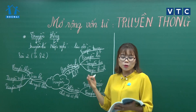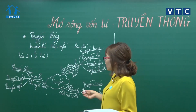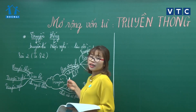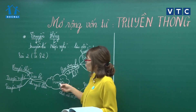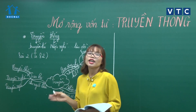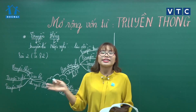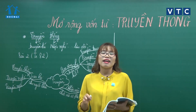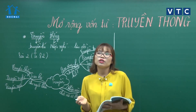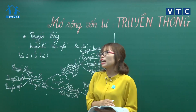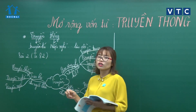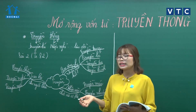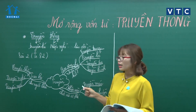Thông qua bài tập số 2, các con sẽ thấy nghĩa của từ truyền bao hàm ba lớp nghĩa cơ bản: thứ nhất là trao lại cho người khác (truyền ngôi); thứ 2 là làm lan rộng để thật nhiều người biết (truyền bá); thứ 3 là nhập vào cơ thể hoặc đưa vào cơ thể một cái gì đó (truyền máu, truyền nhiễm).